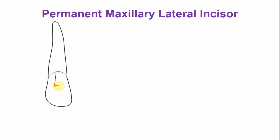The coronal portion has two pulp points. The size of the pulp chamber is smaller, and it corresponds to the size of the crown — it is smaller than the maxillary central incisor. There is a single canal.